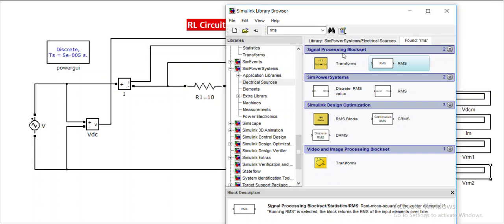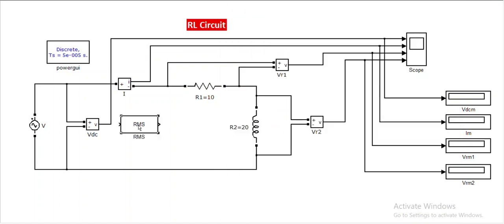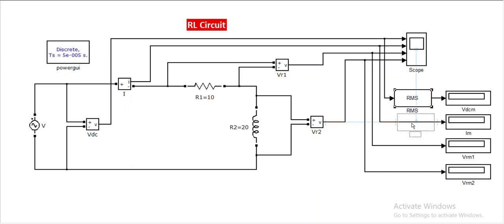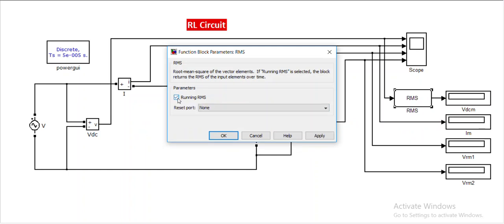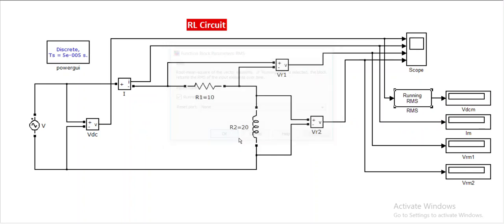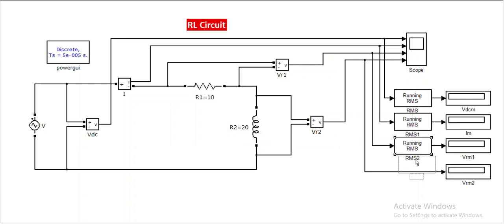Please click the RMS block in the Simulink library so that we can get an RMS block. Right-click, drag and drop to get one more RMS block. Before going further, I need to change this to running RMS so that it will run properly. Click here and drag and drop — that's it.